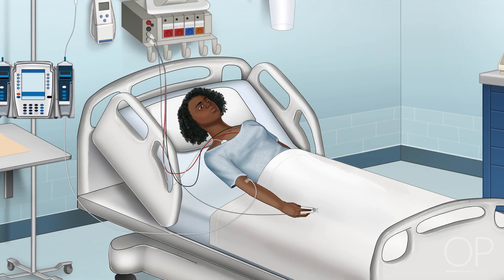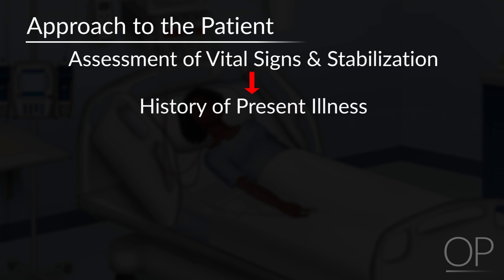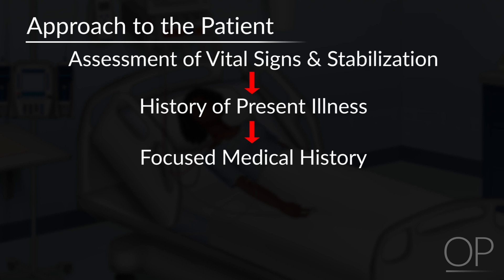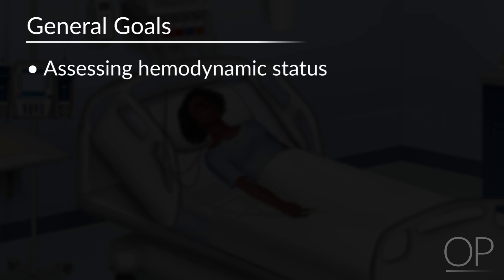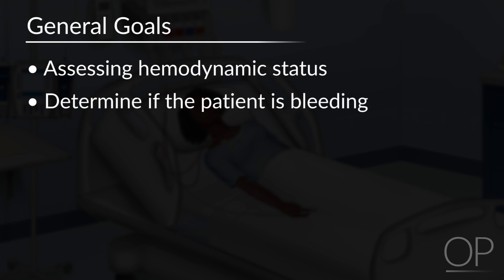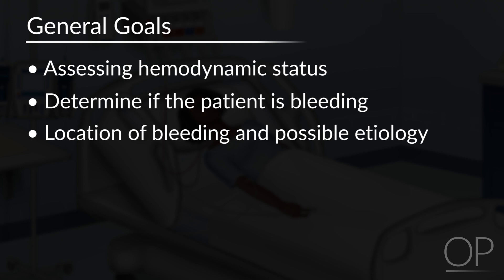When initially evaluating a patient with GI bleeding, you should focus on the assessment of vital signs and begin stabilization if necessary, history of present illness, doing a focused medical history, physical examination, and lab and diagnostic testing. The general goals involve assessing hemodynamic status, determining if the patient is actively bleeding, determining the location of bleeding, as well as possible etiology.